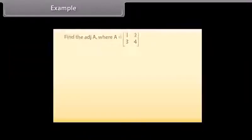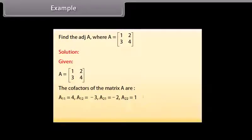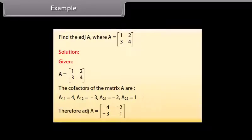Example: Find the adjoint of A where A has first row [1, 2] and second row [3, 4]. Solution: The cofactors of matrix A are: A11 = 4, A12 = −3, A21 = −2, A22 = 1. Therefore, adj(A) is the matrix with first row [4, −2] and second row [−3, 1].